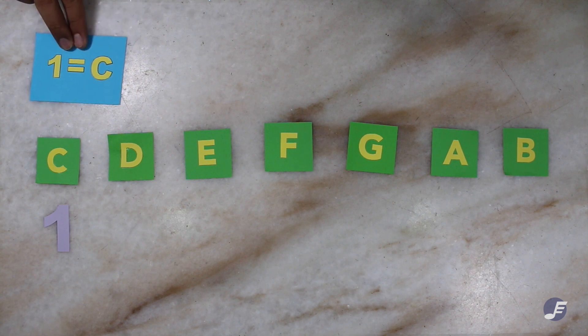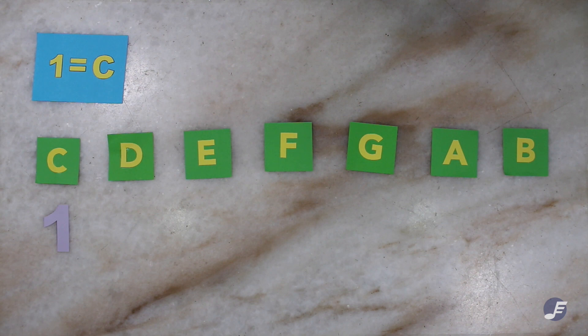Now, let's look at a very common key, the key of C, usually notated on the top left corner of the score. So with one representing C, the other notes are shown in this way.